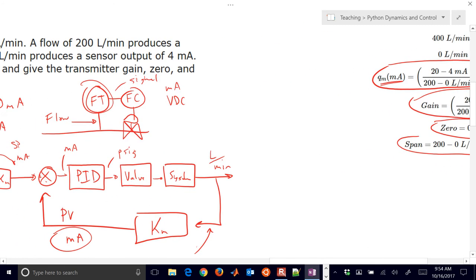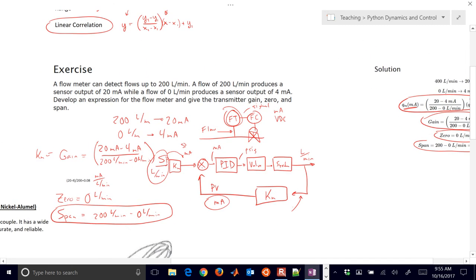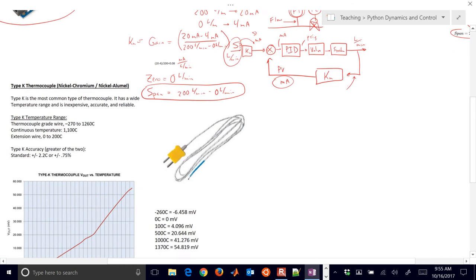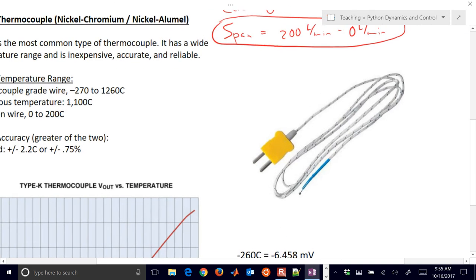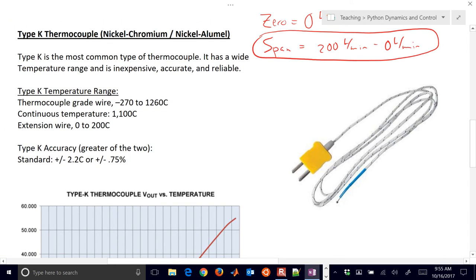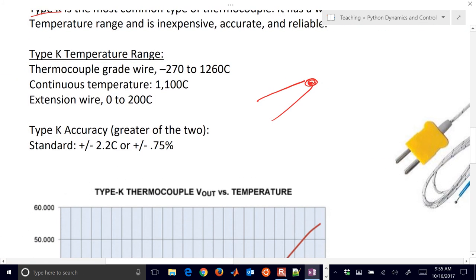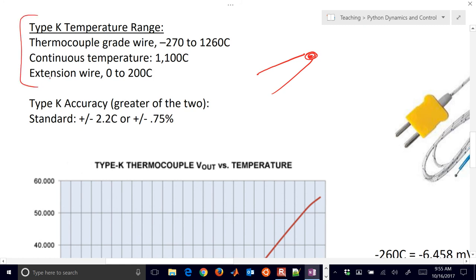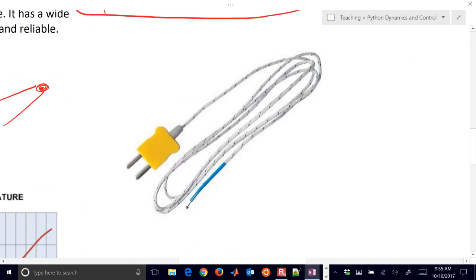So let's go on to, I want to talk just a little bit about a very common type of sensor that's used in a lot of processes. And this is the type K thermocouple. So this is a joining of two dissimilar metals. Two dissimilar metals with this bead. And on one side, you're going to have a nickel chromium and the other a nickel alamel. And the type K is probably the most common type of thermocouple. It has this wide temperature range and is inexpensive, accurate, and reliable. Just a little bit of information about a type K thermocouple. And you can see a picture of it right here.